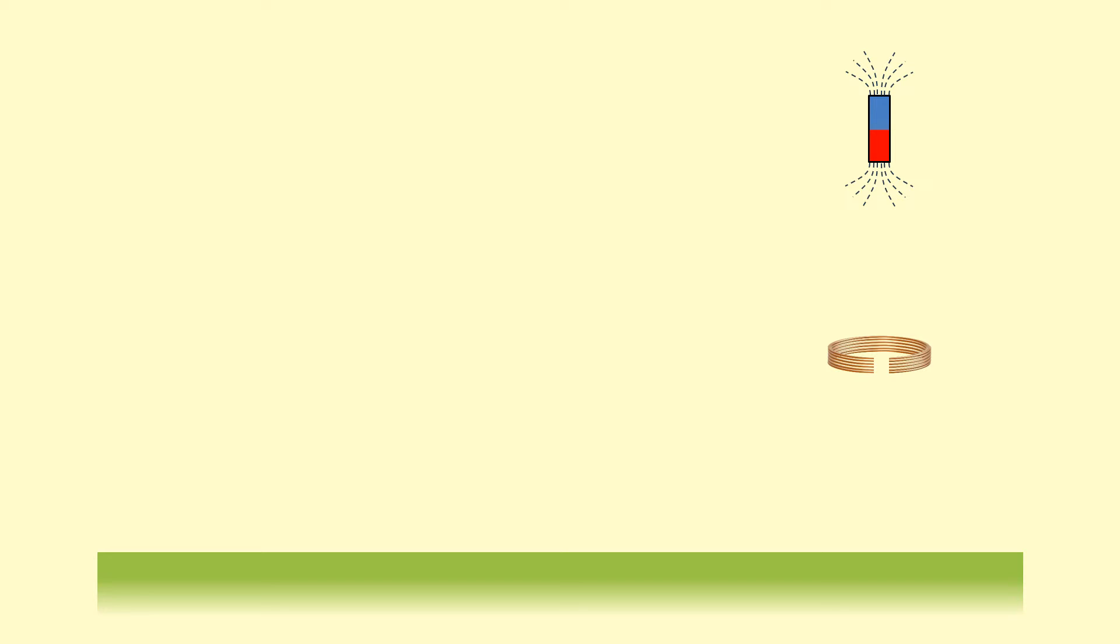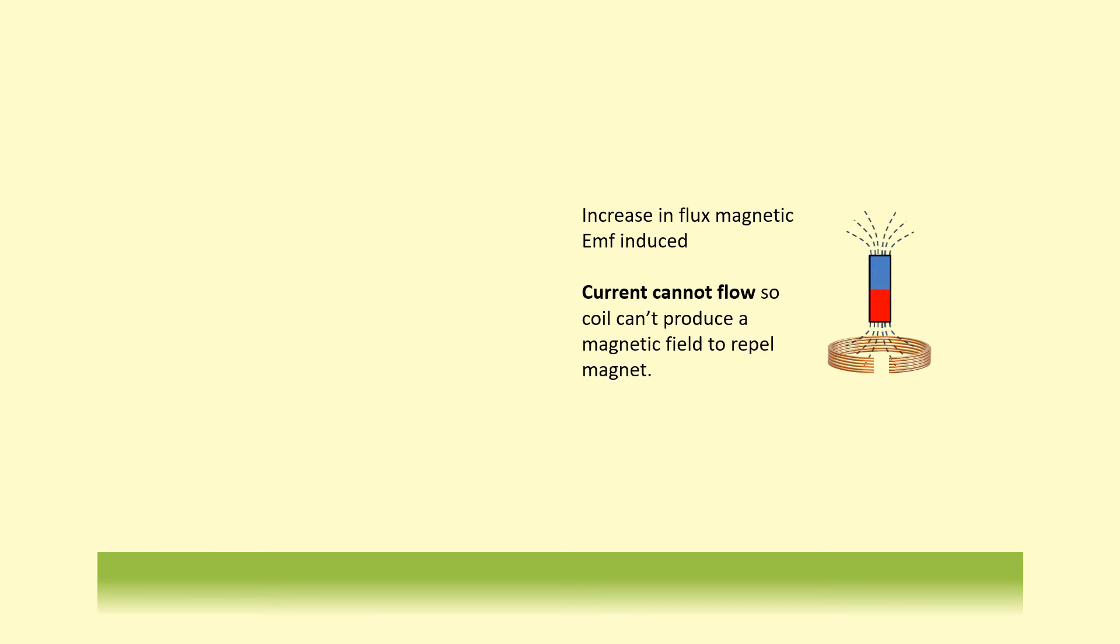Finally, we have magnet C. As you release this magnet, there is going to be an increase in flux. So an EMF will be induced inside this coil. However, we can't have a complete loop of current flowing around. So it can't produce its own manifold to try to repel the magnet. So this one is going to hit the ground at the same time as A, because there's no force on it, except weight.